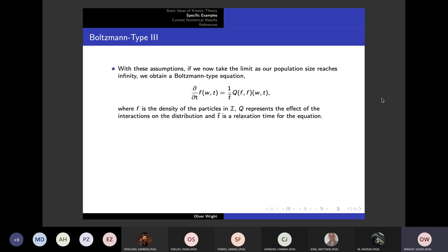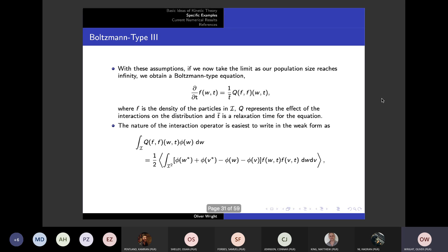Considering only one and two particle marginals of that total distribution function, and making the assumption that the one particles have no correlation, we can generate a Boltzmann equation or Boltzmann type equation by taking the limit as our population size goes to infinity.